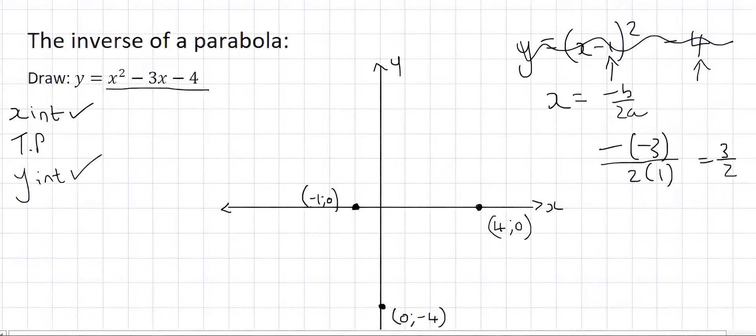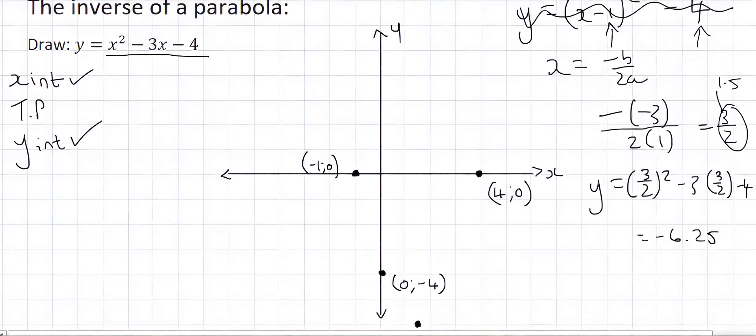To find the y value of your turning point you'll just plug that x value into the original equation like this and then you'll go work that out. And that gives us negative 6.25. So our turning point is going to be located at 1.5 or 3 over 2 for the x values and then minus 6.25 for the y.